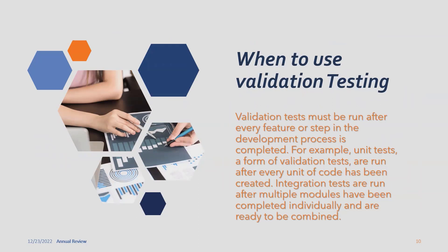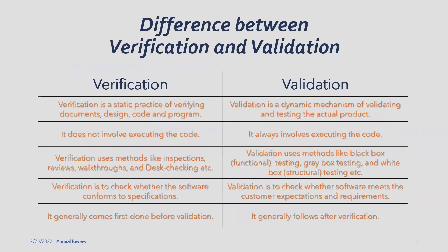Validation testing must be run after every feature or step in the development process is completed. For example, unit tests — a form of validation test — are run after every unit of code has been created. Integration tests are run after multiple modules have been completed individually and are ready to be combined.